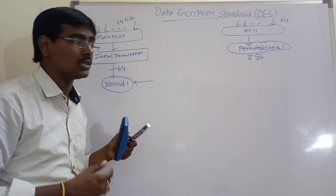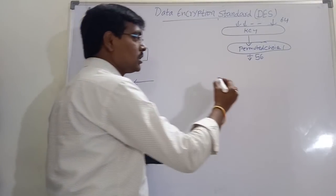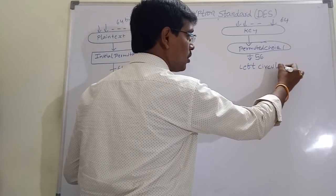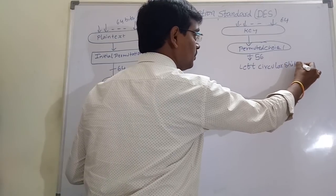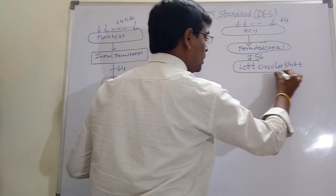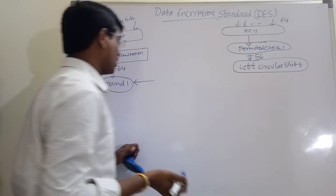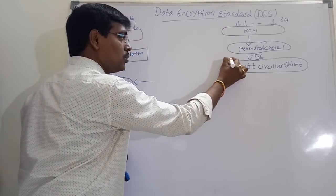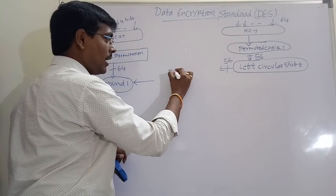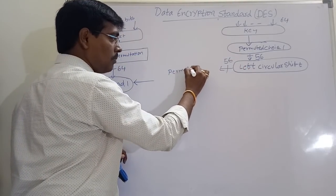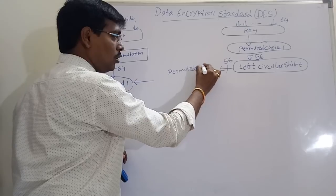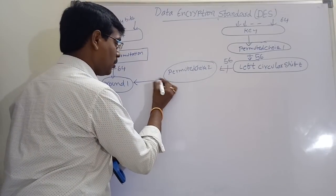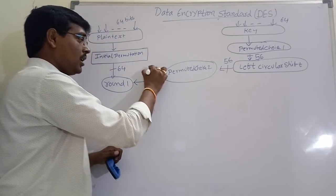This produces 56 bits. These 56 bits are then applied into a left circular shift operation. After completion of the left circular shift operation, it produces 56 bits again. Then permuted choice 2 is performed, which produces 48 bits.